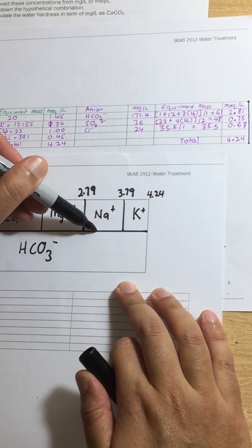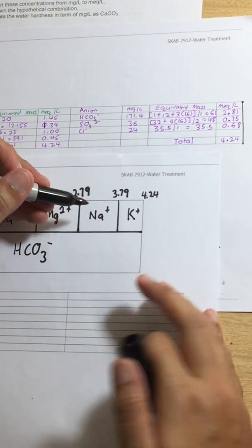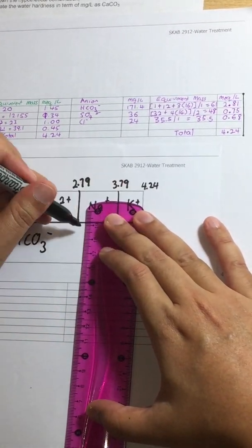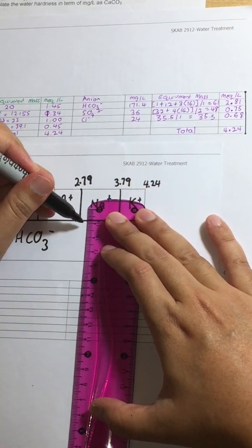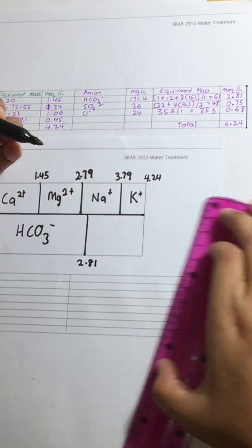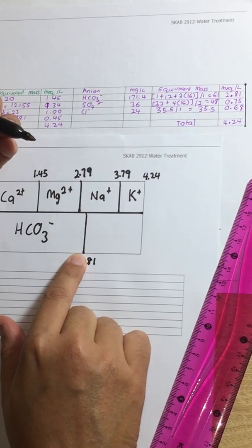That means 2.81 has got to be greater than 2.79. So the line has got to be further more, a little bit more towards right side. So perhaps that is 2.81. That is the concentration for bicarbonate.